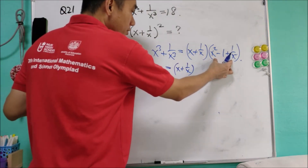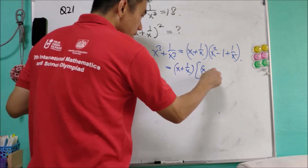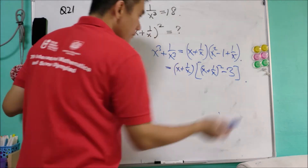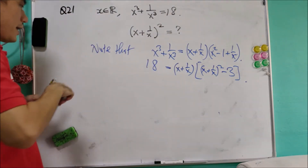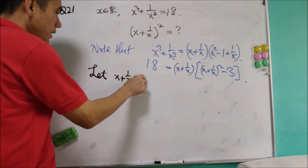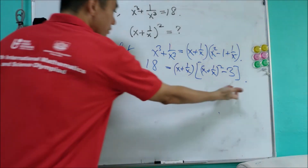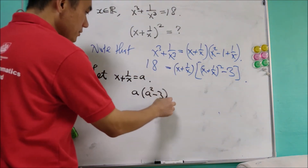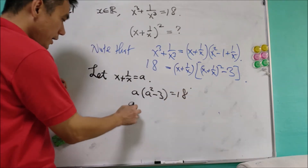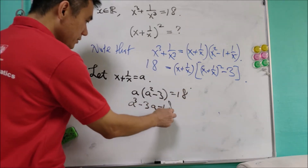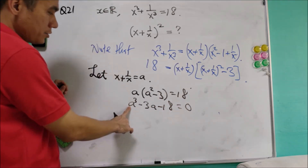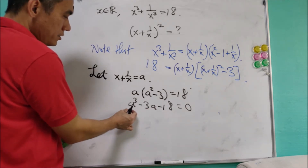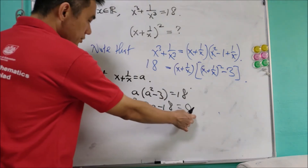The term x squared plus 1 over x squared can be written as (x plus 1 over x) squared minus 2. So the expression becomes (x plus 1 over x) times [(x plus 1 over x) squared minus 3], which equals 18. We let x plus 1 over x equal a, so a times (a squared minus 3) equals 18, giving a cubed minus 3a minus 18 equals 0. Checking a equals 3: 27 minus 9 minus 18 equals 0. So a minus 3 is one of the factors.